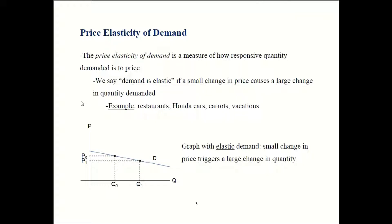Here's what a graph would look like for a good that has elastic demand. The slope is going to be fairly flat. You can see that a small reduction in price gives you a big increase in quantity demanded, so quantity is responding more than one for one.